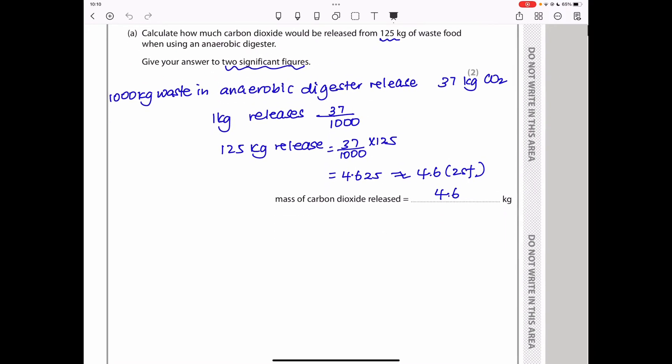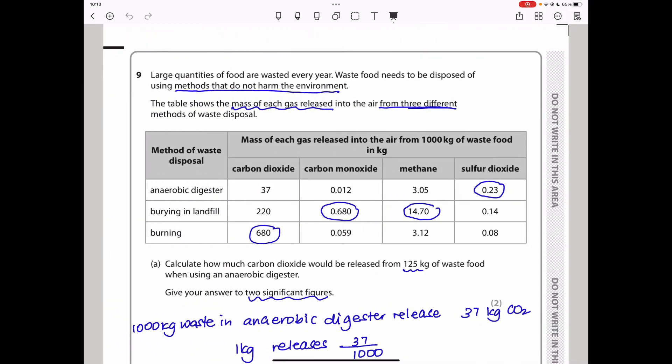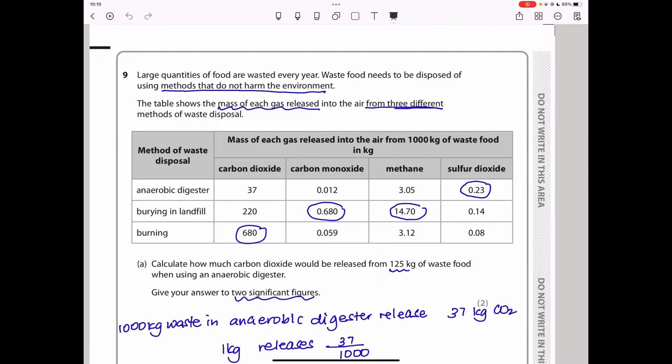Some scientists have claimed that anaerobic digesters are the most environmentally friendly methods of waste disposal. Evaluate this claim using the data from the table and your own knowledge. In an anaerobic digester, we can see there is some carbon dioxide, low carbon monoxide, low methane. This methane is kind of close to that, but there is sulfur dioxide. So it means we're going to talk about the sulfur dioxide produced, the acid rain, and so on.